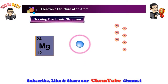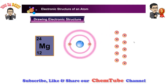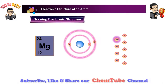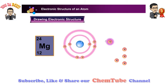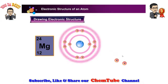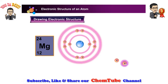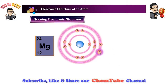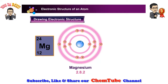Shell number one can only hold two electrons. Shell number two can hold up to eight electrons. There are two electrons left, which go into shell number three. We have the electrons arrangement of magnesium. The electronic arrangement is two dot eight dot two. Two represents electrons in shell number one, eight represents electrons in shell number two, and two represents electrons in shell number three.